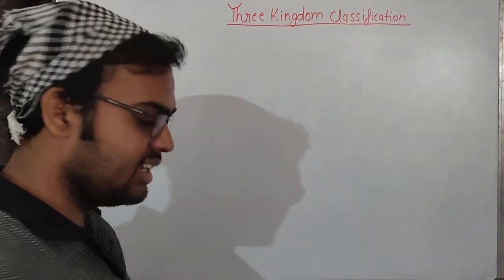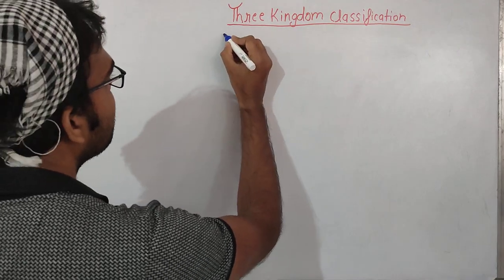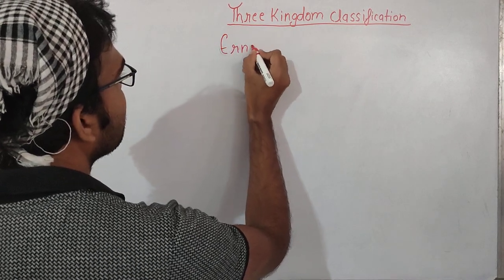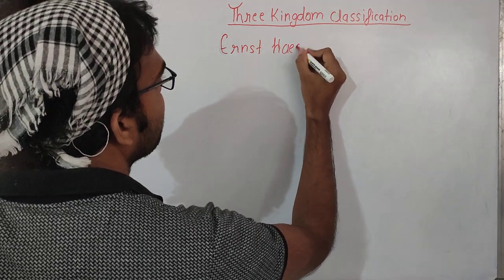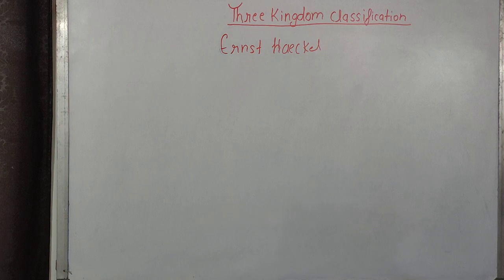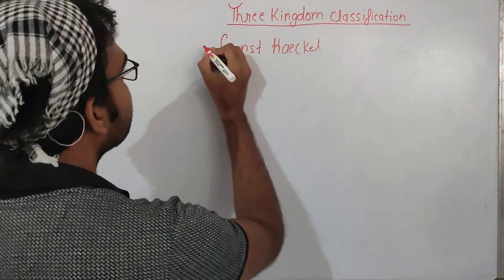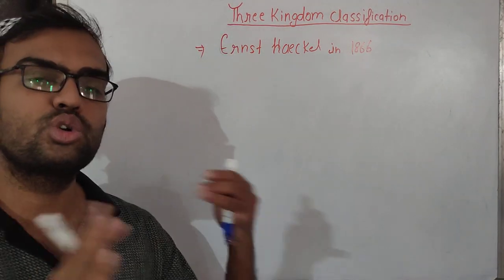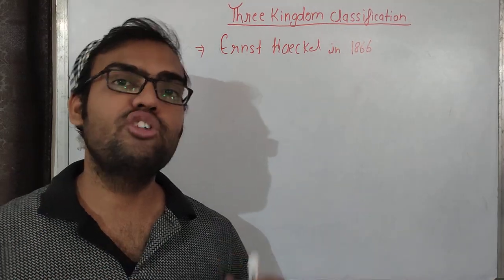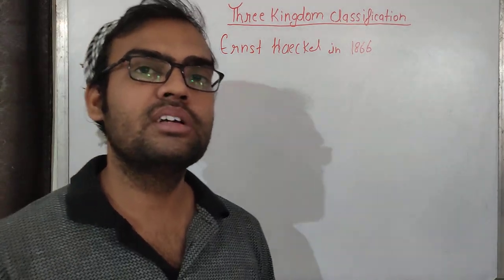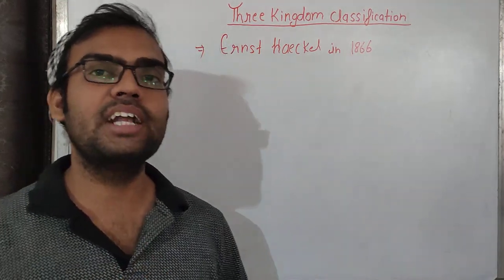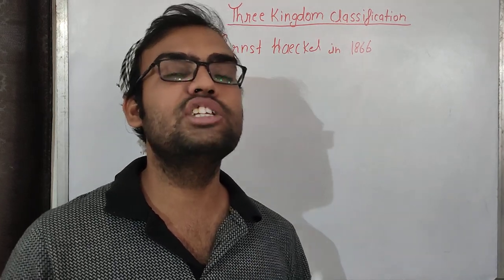Today we will talk about the three kingdom classification. This classification was given by Ernst Haeckel in 1866. Like Linnaeus, he divided organisms into Plantae and Animalia, but there were some drawbacks with that two kingdom system. So Haeckel introduced one more kingdom called Protista in order to overcome those drawbacks.